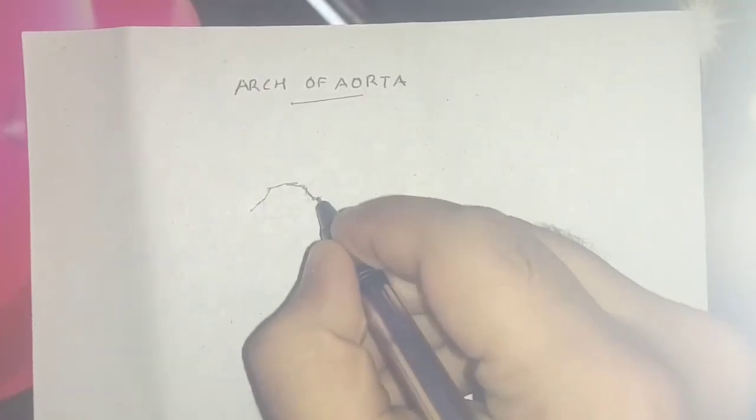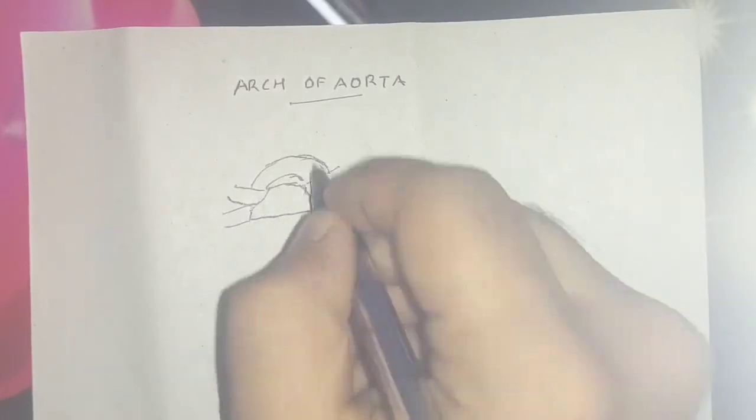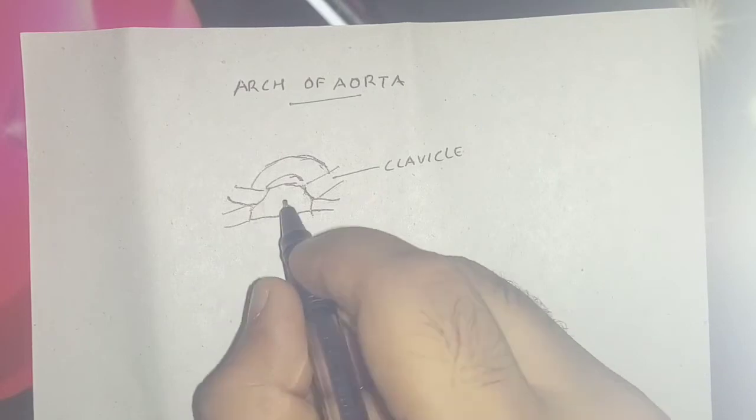Hello guys, welcome back to YouTube channel PD Bros, this is me Debra on the topic arch of aorta. The arch of aorta is the continuation of the ascending aorta. The course begins behind the upper border of the second right sternocondral joint.